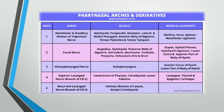Pharyngeal arches and their derivatives. First arch: the nerve is the mandibular and maxillary divisions of the trigeminal nerve. The muscles are mylohyoid, temporalis, masseter, lateral and medial pterygoid, anterior belly of digastric, tensor palatini, and tensor tympani. Bones and ligaments include the malleus, incus, and sphenomandibular ligament.